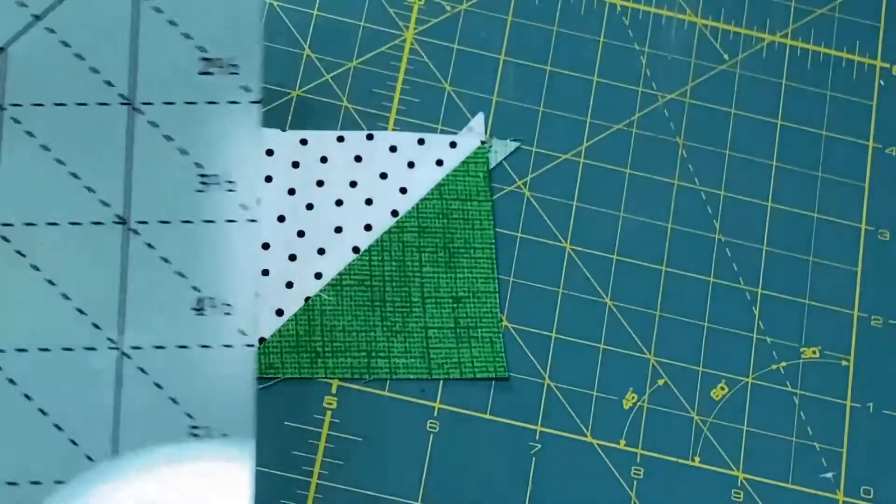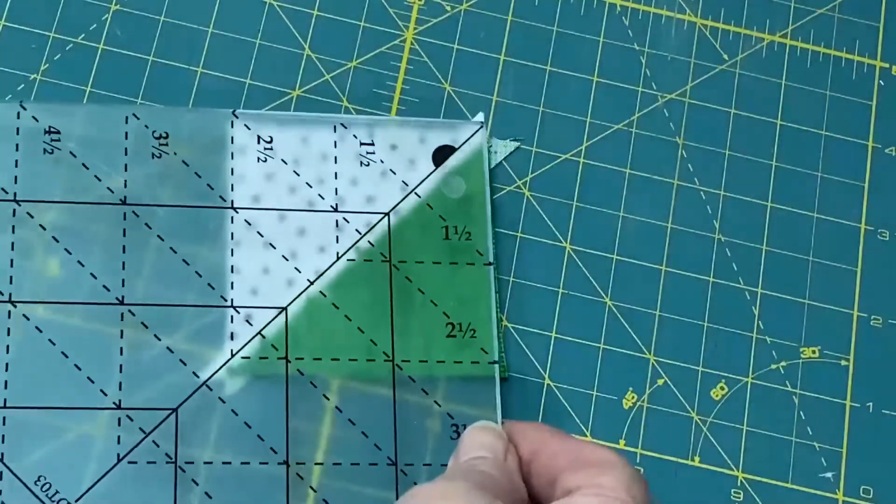I like to use the Tucker Trimmer, which is a great tool for trimming down half-square triangles.